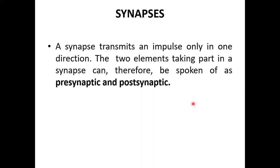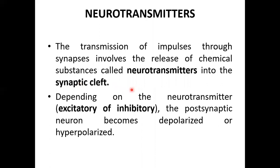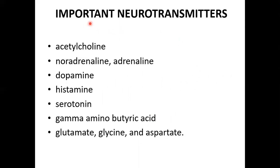The synapse transmits an impulse in one direction only; the two elements are called the pre-synaptic and post-synaptic elements. A neurotransmitter is a chemical released into the synaptic cleft that generates an action potential, which can be excitatory or inhibitory. Important neurotransmitters include acetylcholine, adrenaline, noradrenaline, dopamine, histamine, serotonin, GABA, glutamate, glycine, and aspartate.